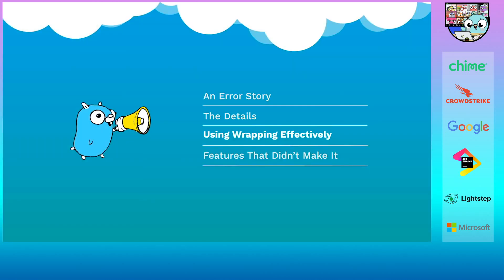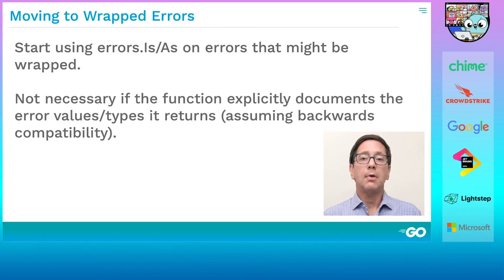Now let's talk about how you can incorporate wrapping into your programs and use it well. How should you start migrating your code to use wrapped errors? The first step is to be a good client. Start using errors.is in place of equality checking and errors.as in place of type assertions. But don't do it blindly. If you're calling a function that explicitly documents that it will return a particular error or type, and you're confident the author of that function will preserve compatibility, then you needn't make any changes to your current error handling. For example, if a standard library function says it returns io.eof, then the Go 1 compatibility promise ensures that you can continue to check that with equality.